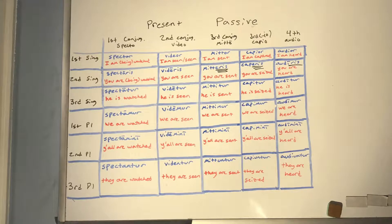Fourth conjugation with AUDIO: AUDIOR (I am heard), AUDIRIS (you are heard — no irregularity since the I is long), AUDITUR (he is heard), AUDIMUR (we are heard), AUDIMINI (y'all are heard), AUDIUNTUR (they are heard). Remember, any third person singular pronoun — he, she, it — is acceptable; the charts show just one for space reasons.